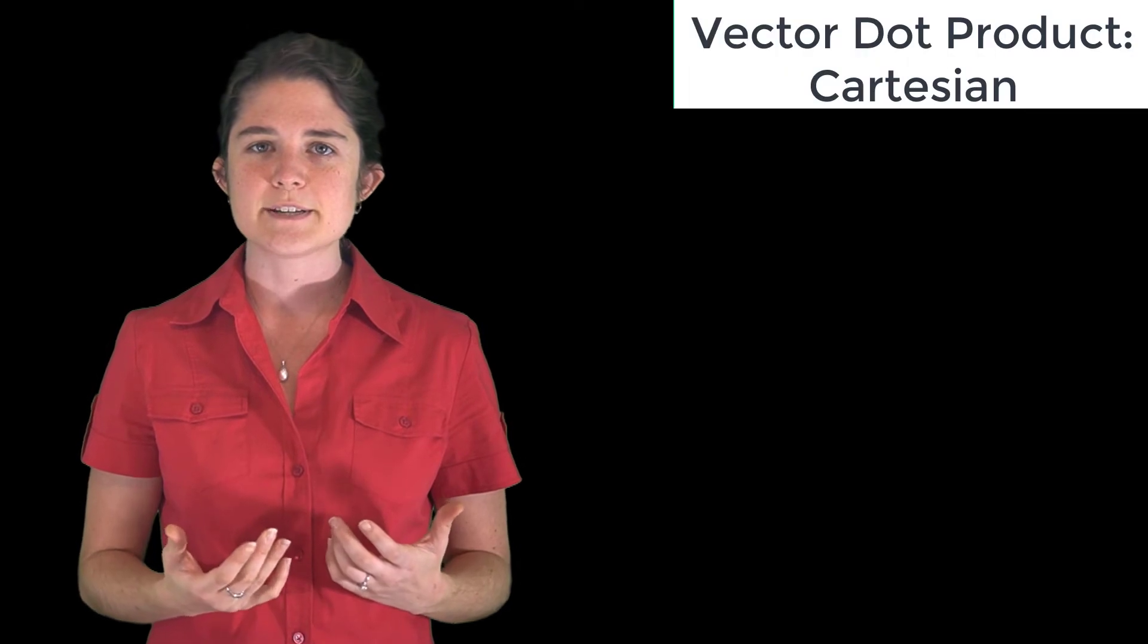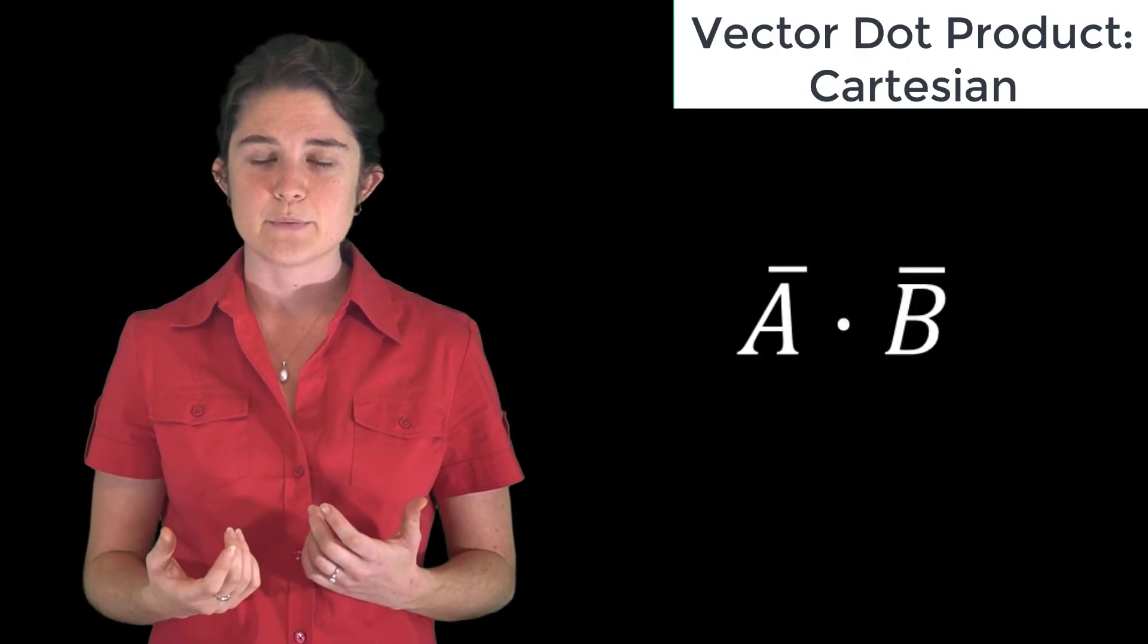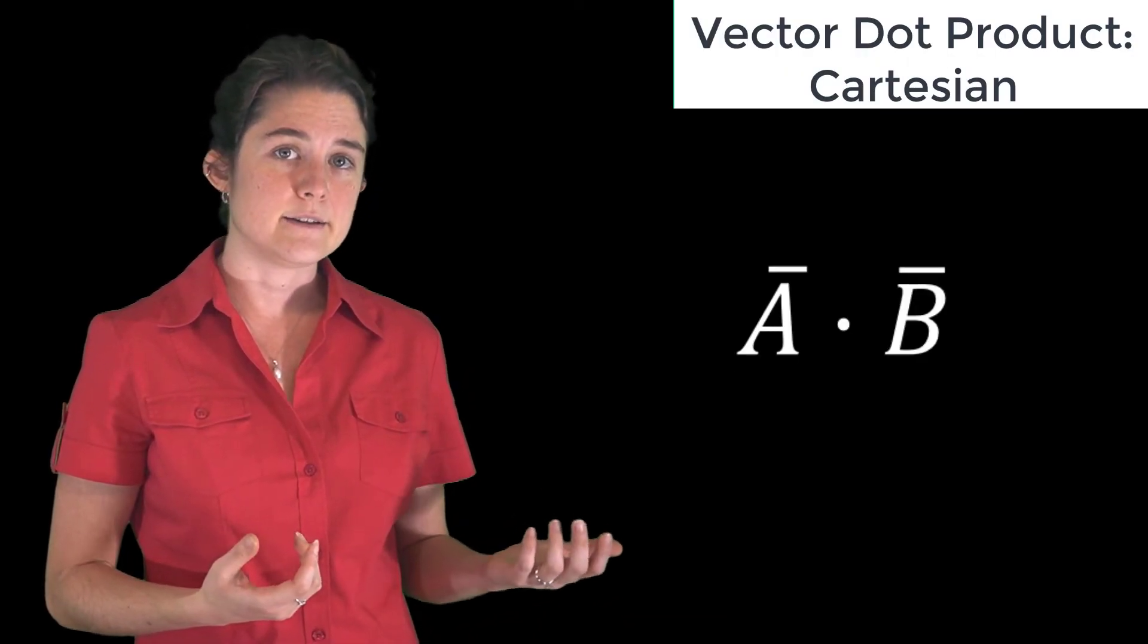There are two ways to do multiplication in vector algebra. The first we'll be talking about is the dot product, which is written like this: a dot b.